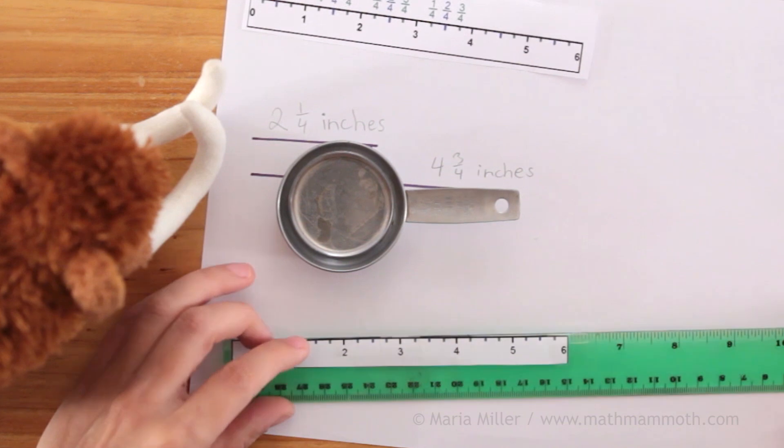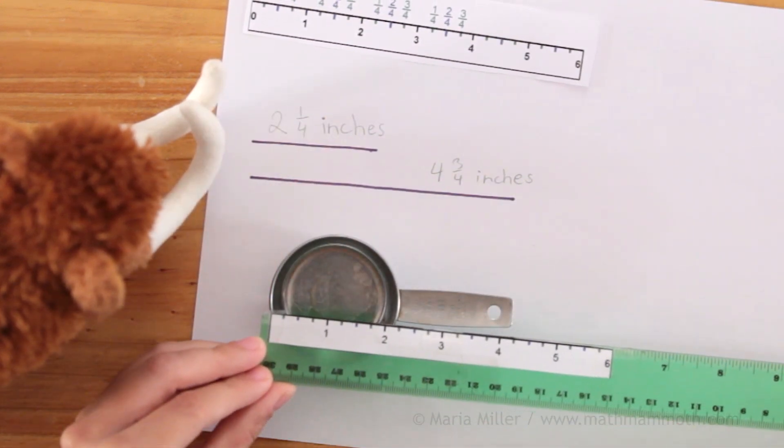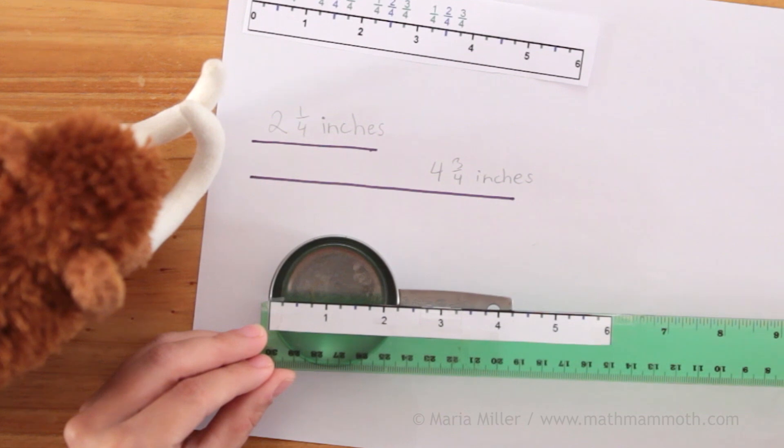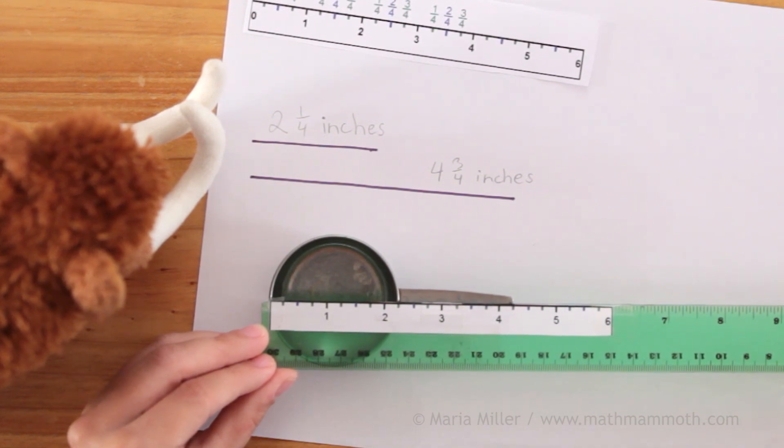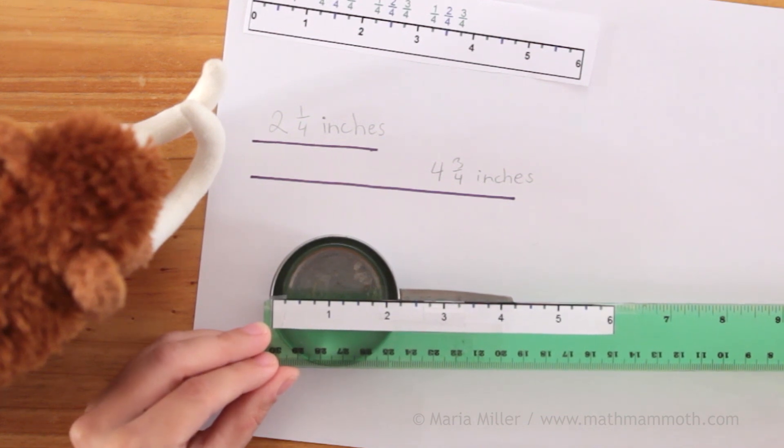Now this little measuring cup I'm gonna measure here at the top, across it. Can you tell me how wide it is across? Two and one-fourth inches.